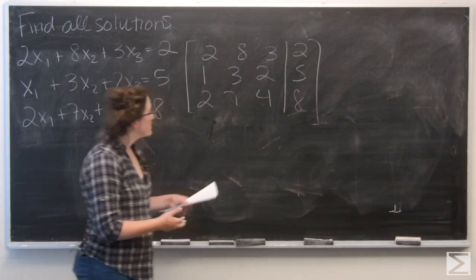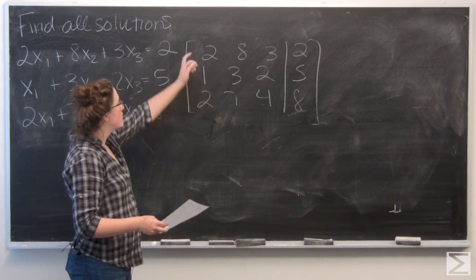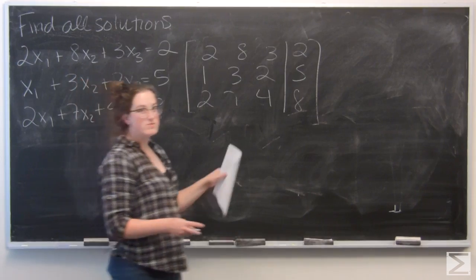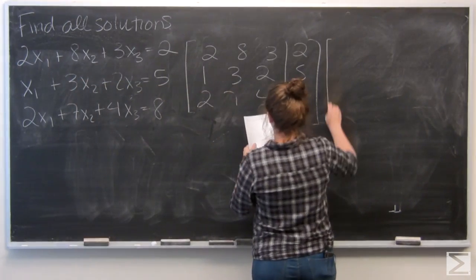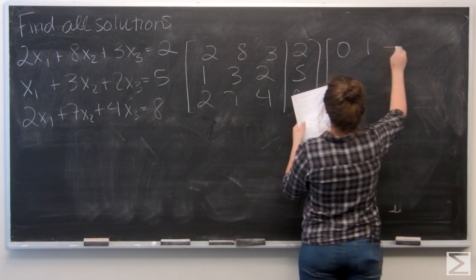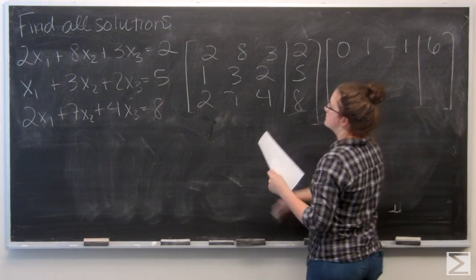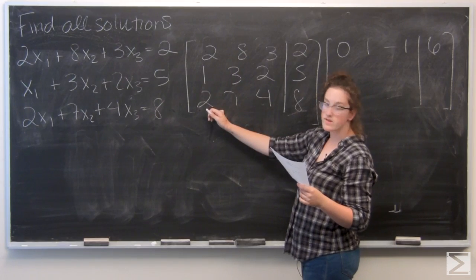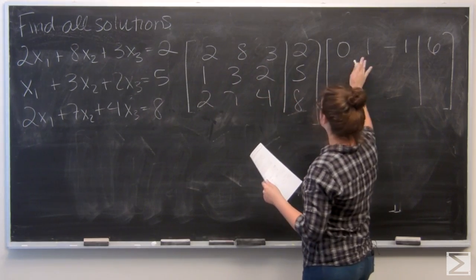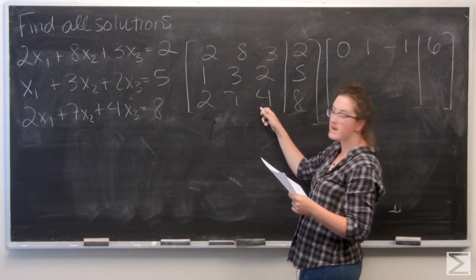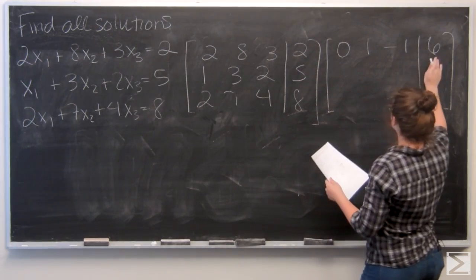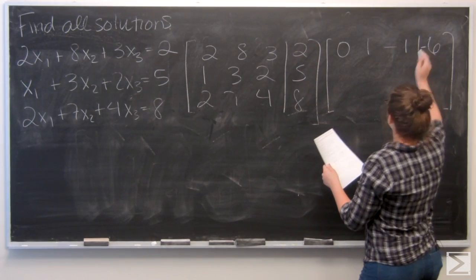So to start, let's subtract the third row from the first to try to clear out some terms in the first column. So I have 2 minus 2 gives me 0, 8 minus 7 is 1, 3 minus 4 is negative 1, and 2 minus 8 gives me a negative 6.